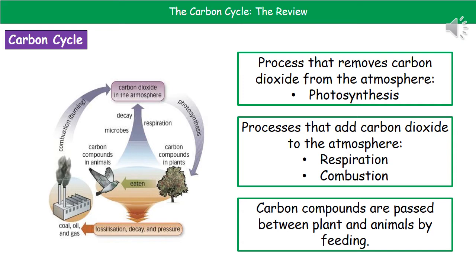The ones that will add carbon dioxide to the atmosphere would either be respiration or combustion. If we have an arrow going from something like vehicles or factories — something that's burning fossil fuels — back to the atmosphere, that's going to be combustion. If we have something going from a living thing back to the carbon dioxide in the atmosphere, that will be respiration, because all living things respire, whether they be plants, animals, or the microbes carrying out decay.